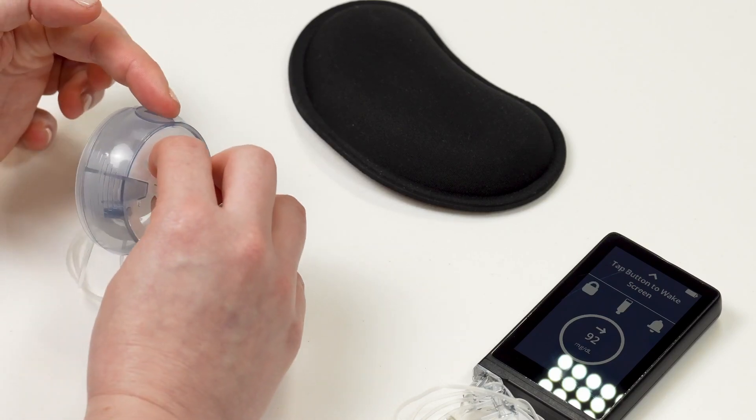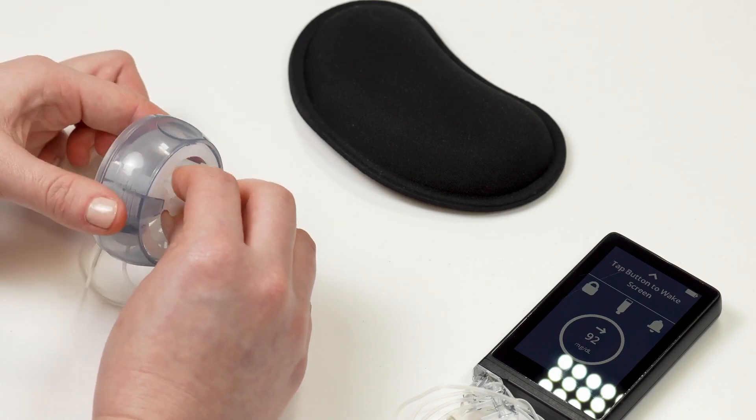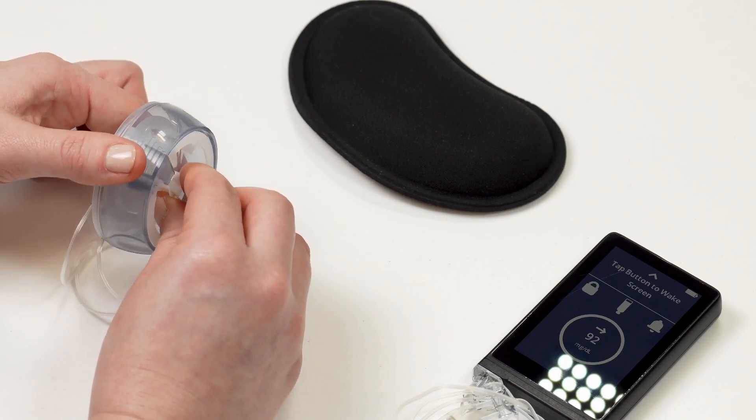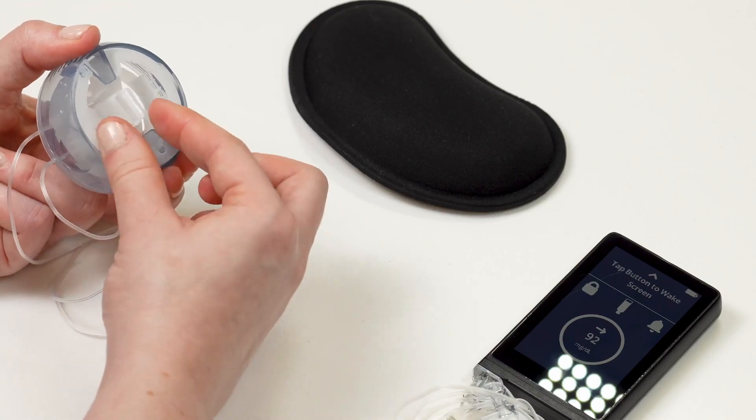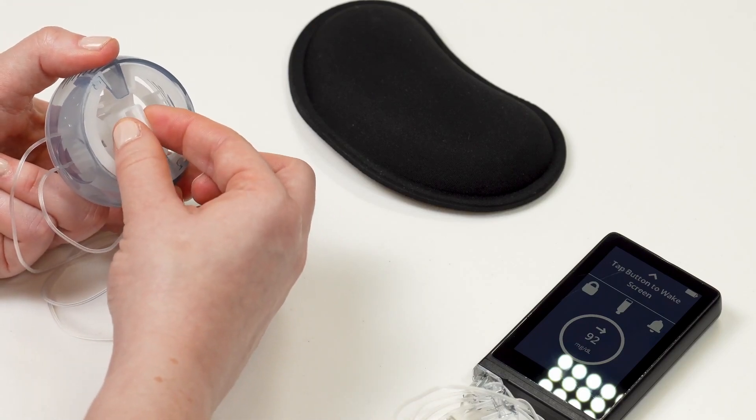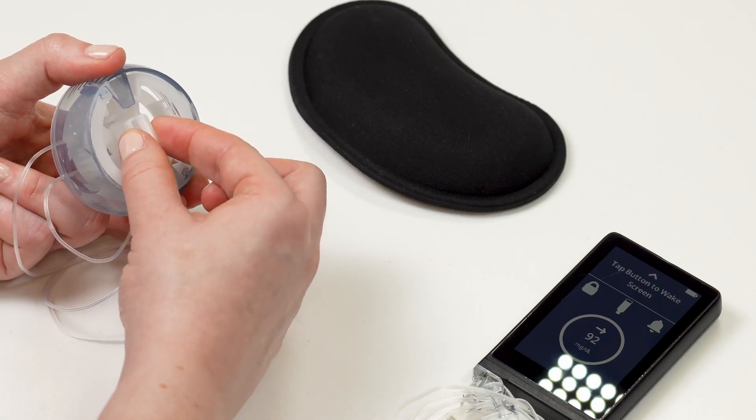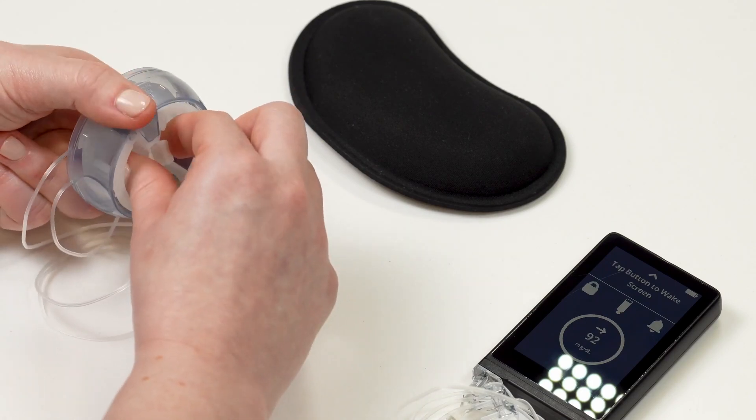The outside of your infusion set has two spots with ridges and two spots with circles. Putting your fingers on the ridges, pull backwards on the white handle of the inserter on the back of your infusion set. Pull this backwards until it clicks.